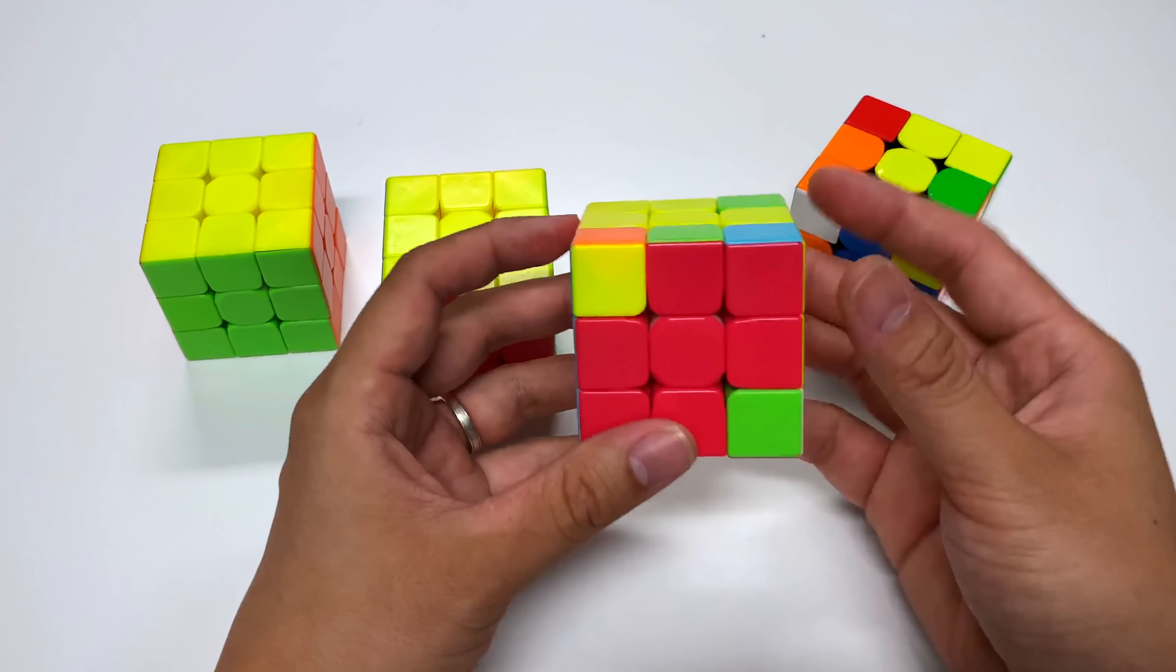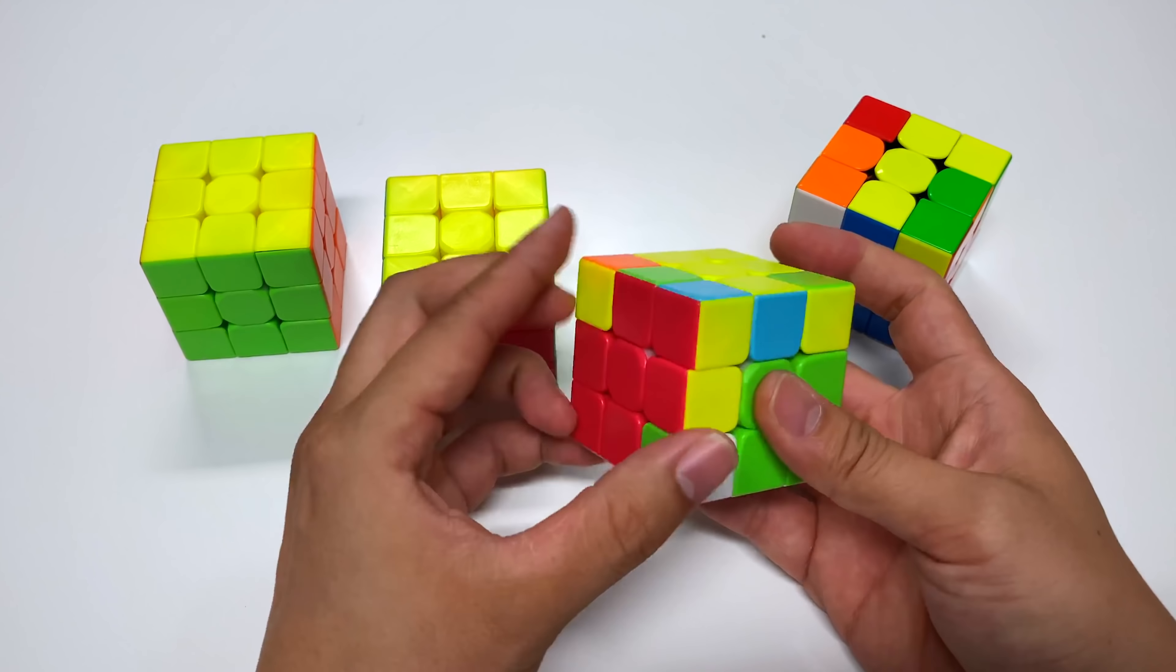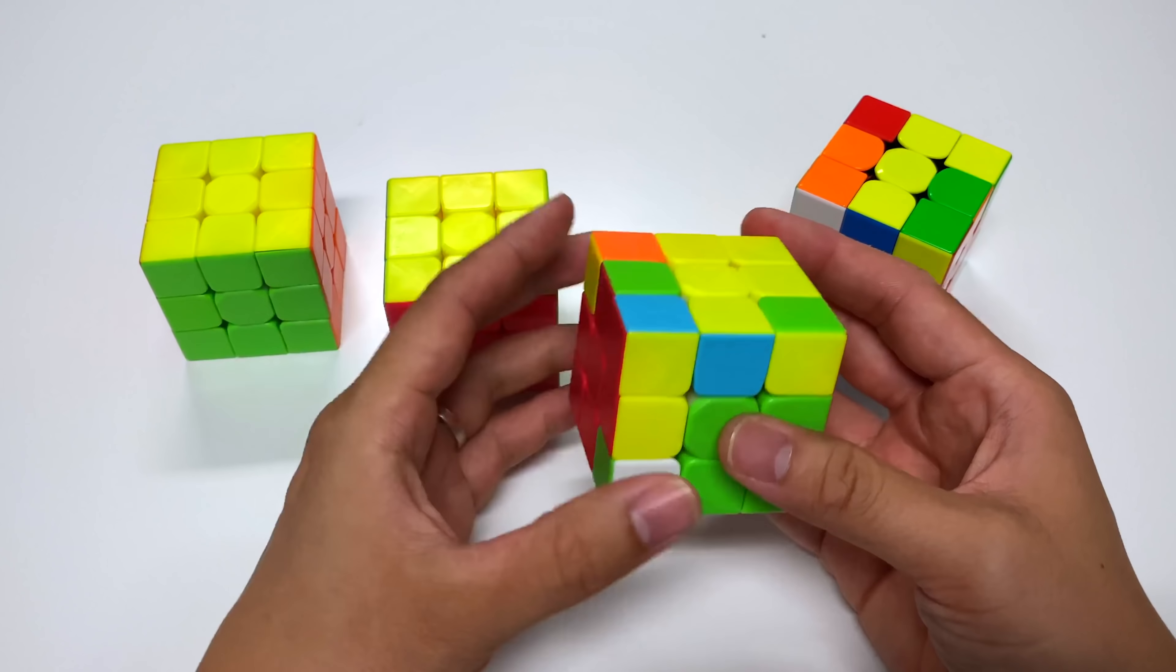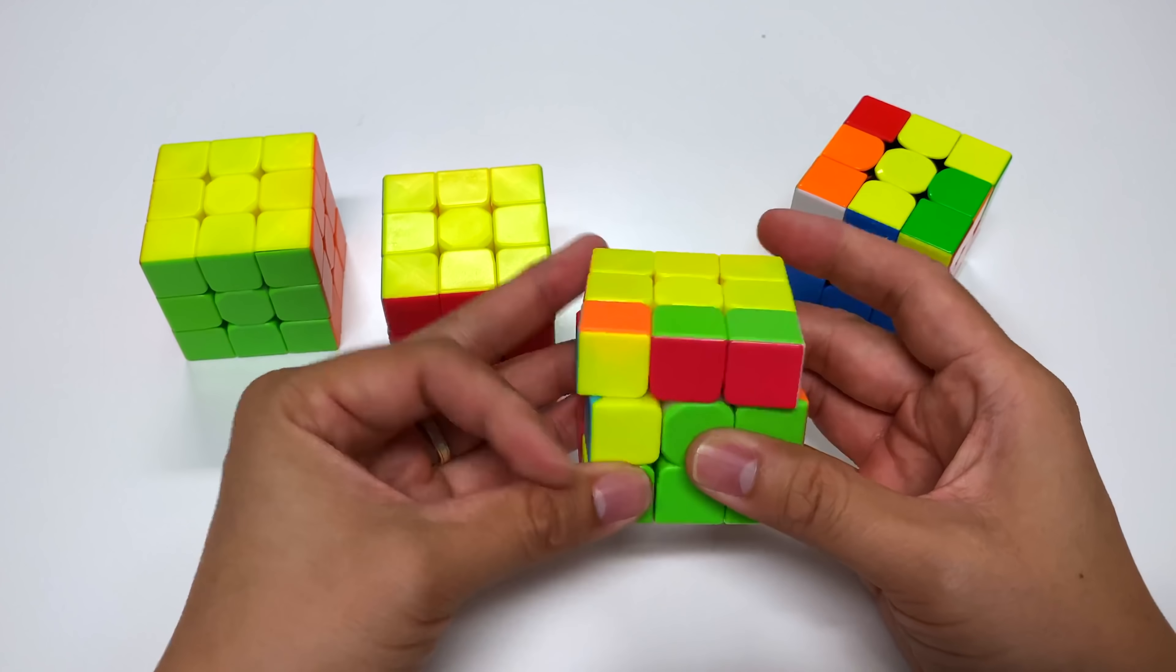And of course, that applies if it's facing this way too. So make sure that that edge is matched up with the side that it should go on. The white sticker facing this way. And then just like that.